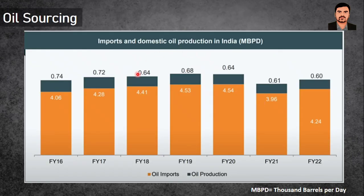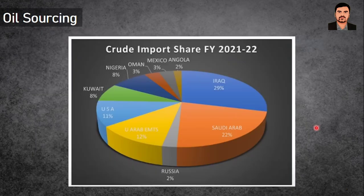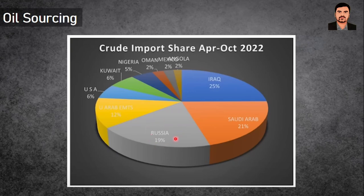Looking at oil sourcing over various years, oil imports account for 75–90% of India's needs. From FY16-17 through FY21-22, domestic oil production is only a small fraction — the rest is completely imported. India is a major importer of crude oil. In FY 2021-2022, India's crude oil imports were predominantly from Iraq, Saudi Arabia, UAE, and USA (11%), with only 2% from Russia.